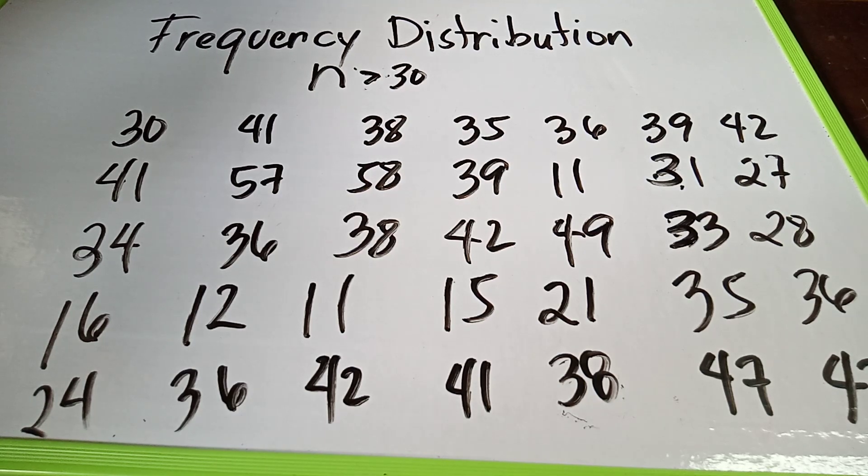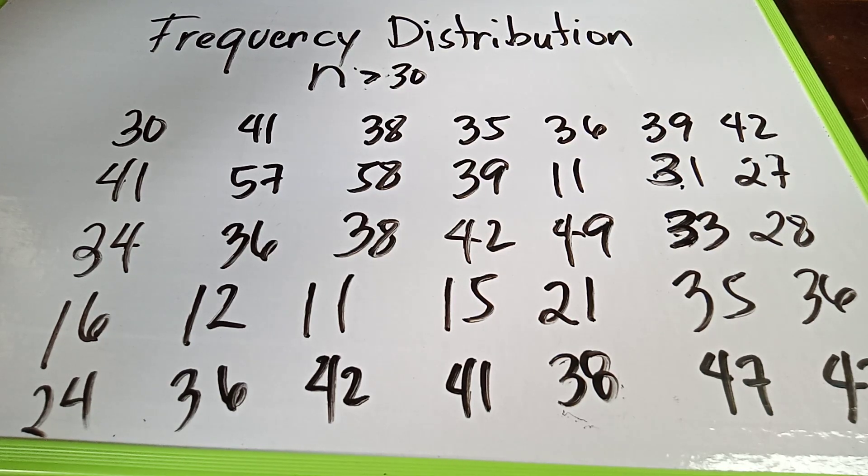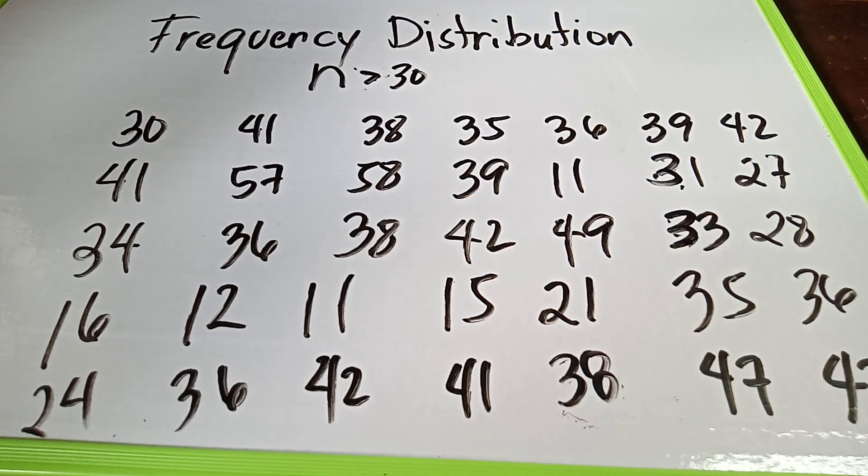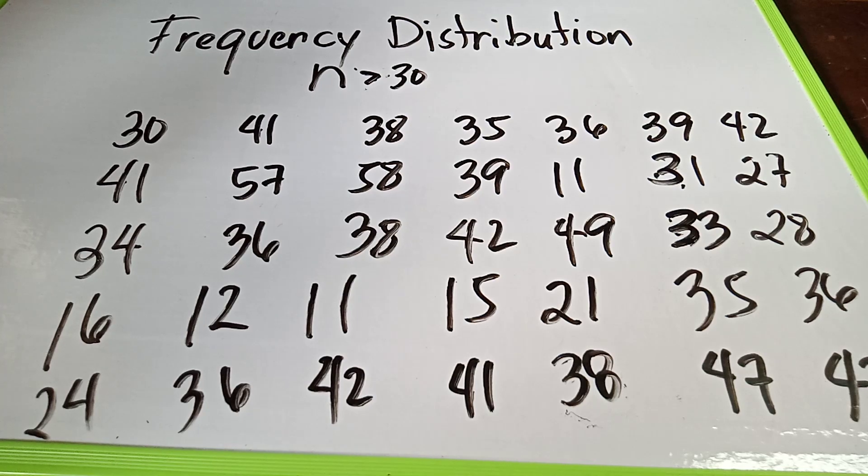So what are the components of frequency distribution? We have the tally, the frequency, the lower boundary, the upper boundary, the upper class boundary, the lower class boundary, and we will get the median. So mostly it is used by mean, median, mode, variance, and standard deviation. So frequency distribution are used almost in a sample data.